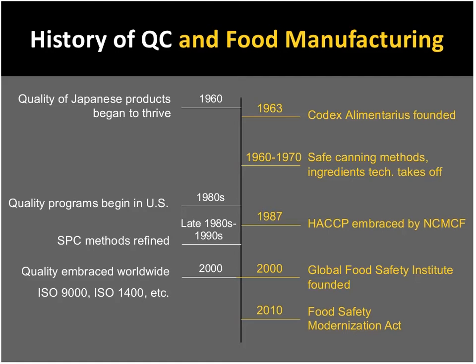This was the first standard at a worldwide level. In the 1960s and 1970s, a big outbreak of Clostridium botulism resulted in the development of safe canning methods, and we started building the knowledge for how to implement quality at manufacturing levels. If you're familiar with the history of HACCP, it came about in the 1980s — the first management system developed specifically for the food industry as a food safety management system.